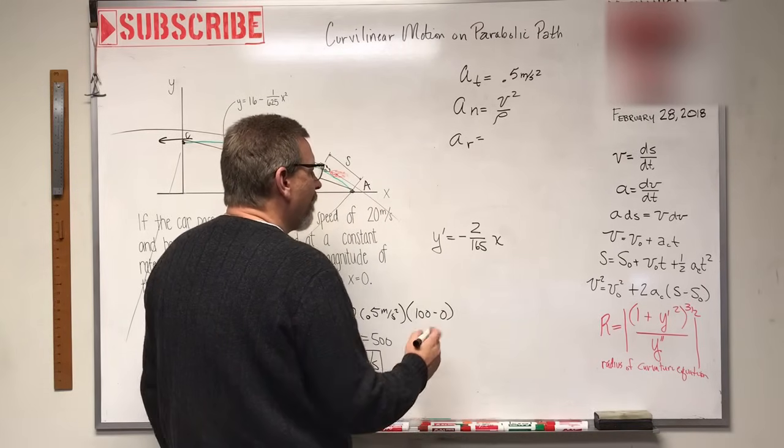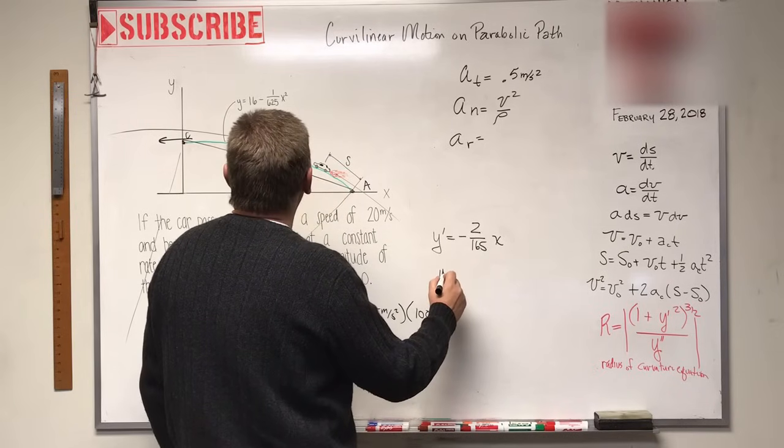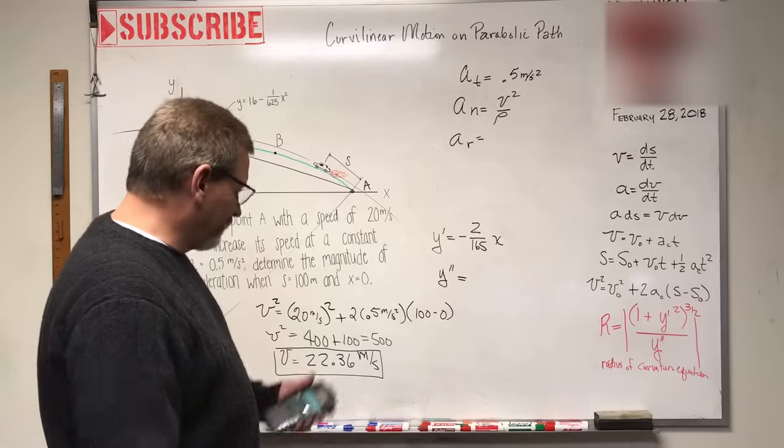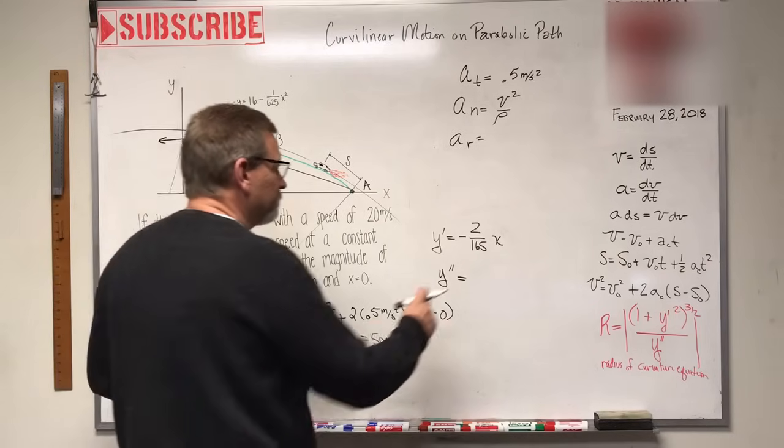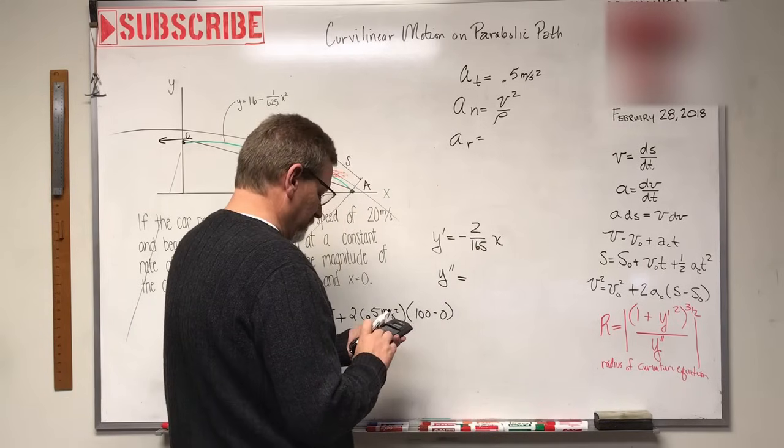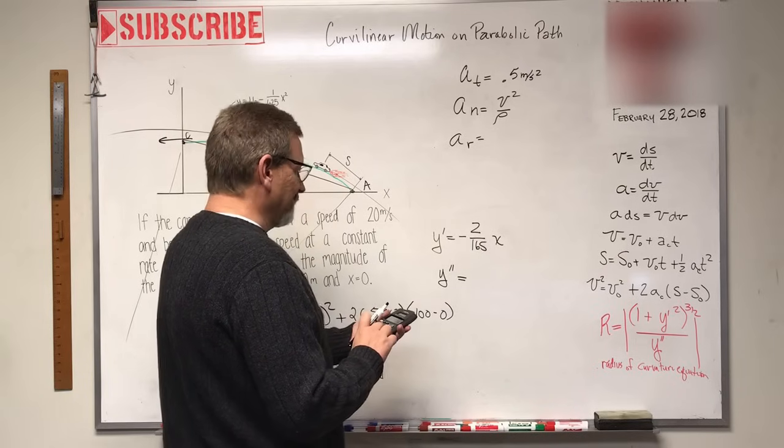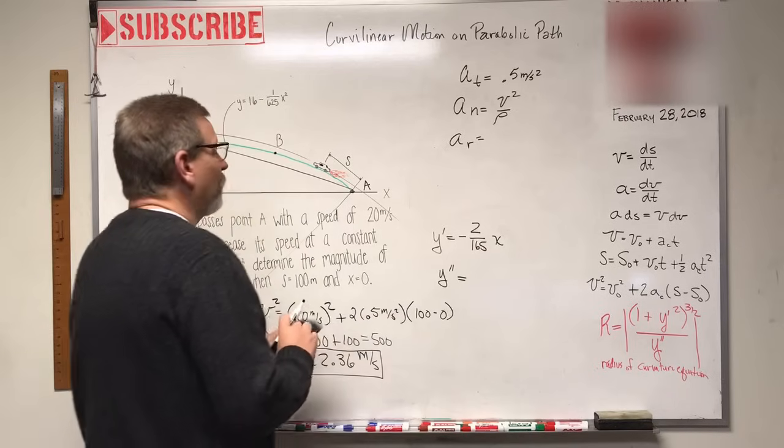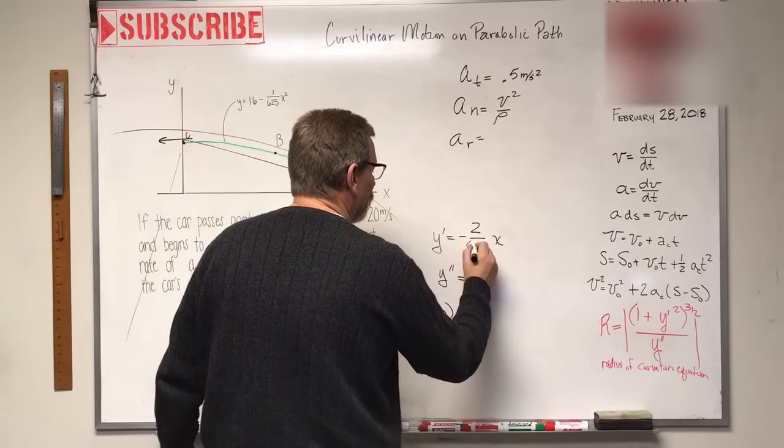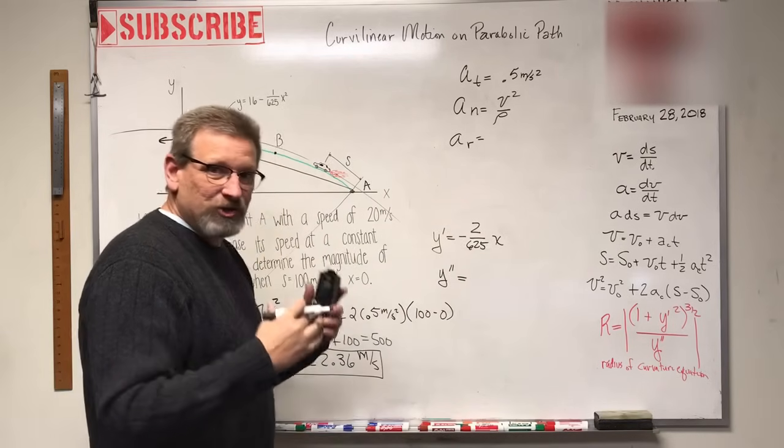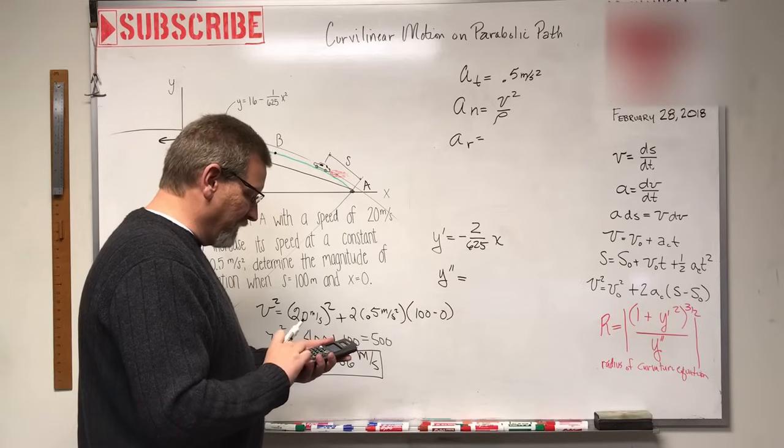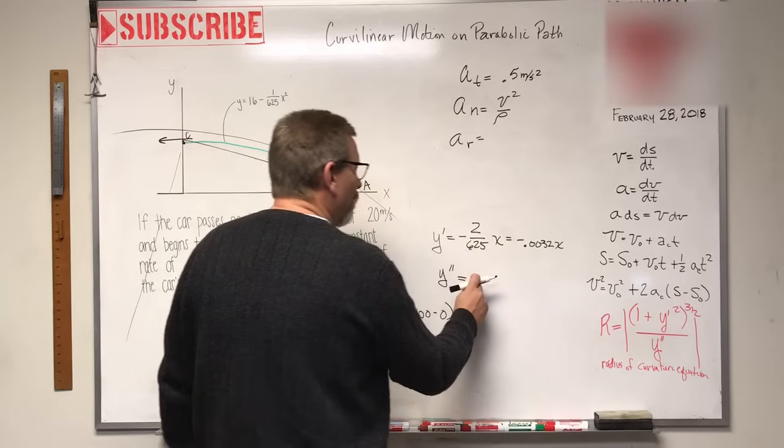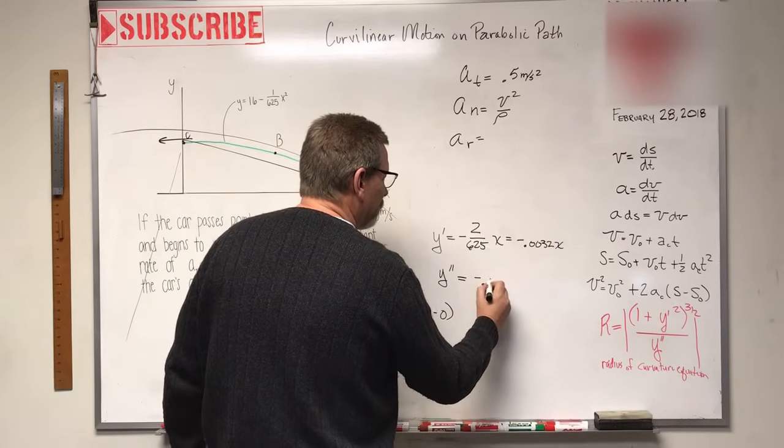Now let's do the second derivative. Y double prime is equal to what? Let's change that - y double prime is what, just this. What is that? Two divided by 625 - that's not 165, it's 625. Two divided by 625 is 0.0032. So this guy here is negative 0.0032x. And y double prime, the derivative of that, is just negative 0.0032.